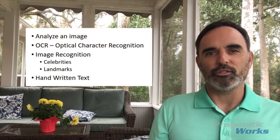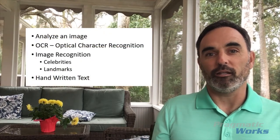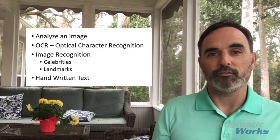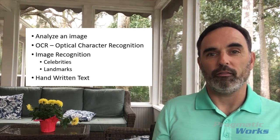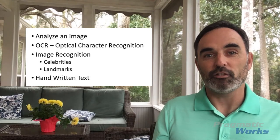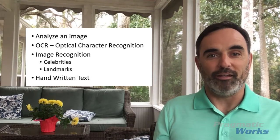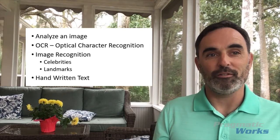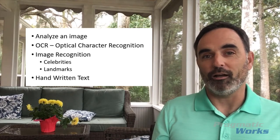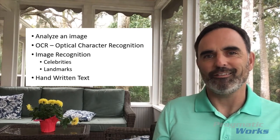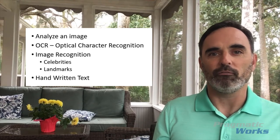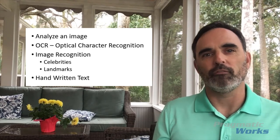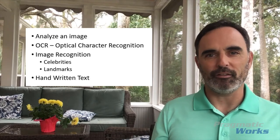To begin with, I want to show you a couple of the things that we can use the Computer Vision API for. One of the things we can do is just analyzing an image. If we provide an image to the API, it can provide a description of that image to us. It can also list out objects that it sees — people, cars, buildings, whether it's inside or outside.